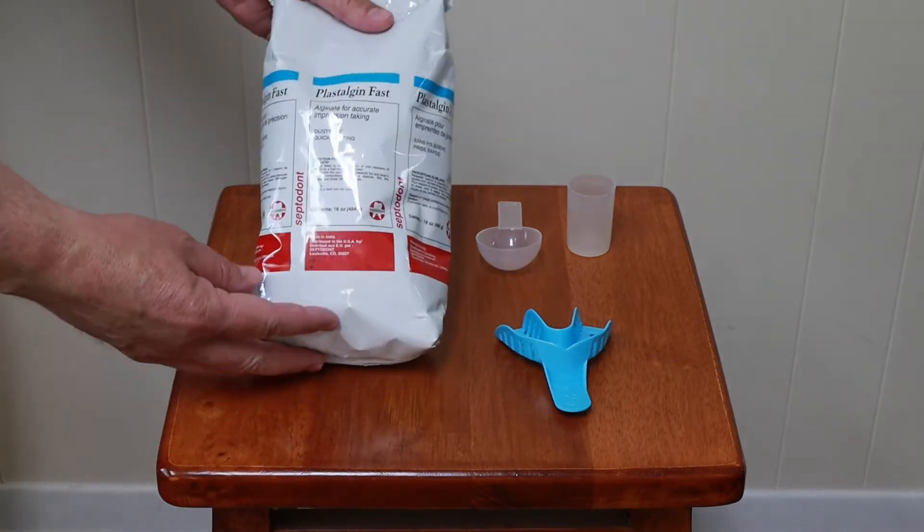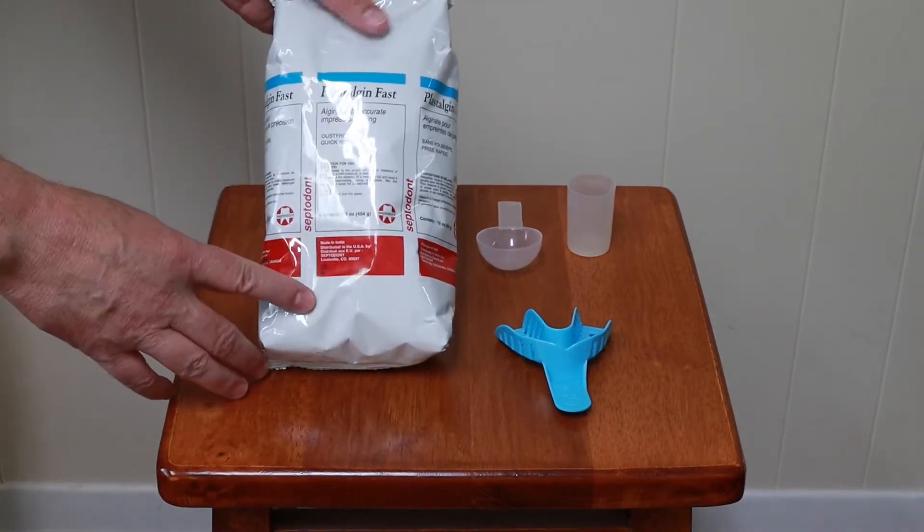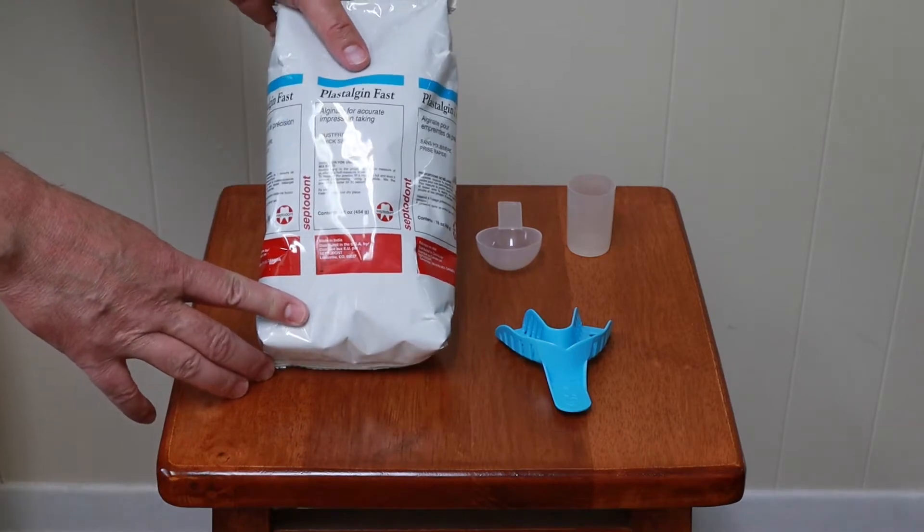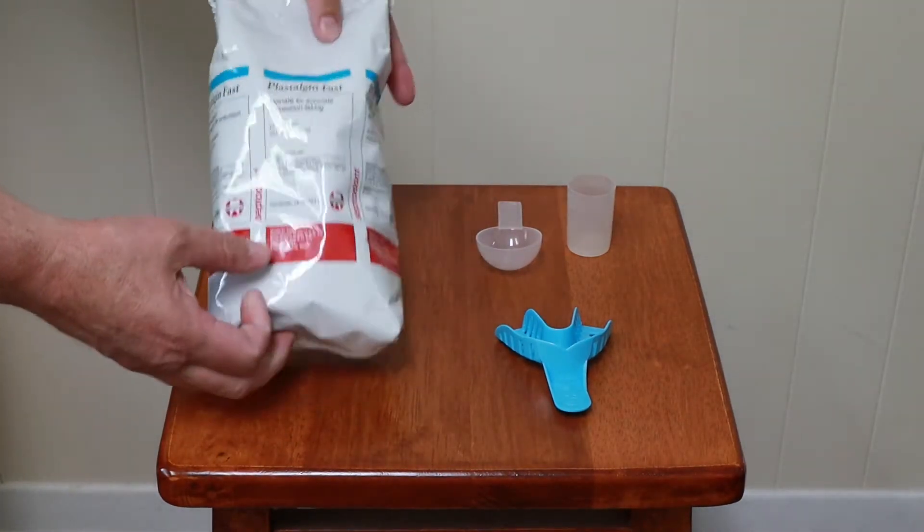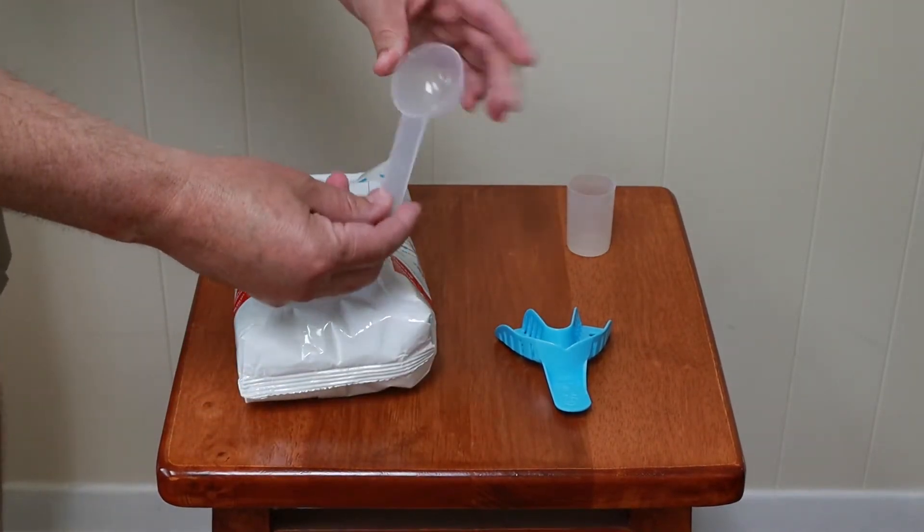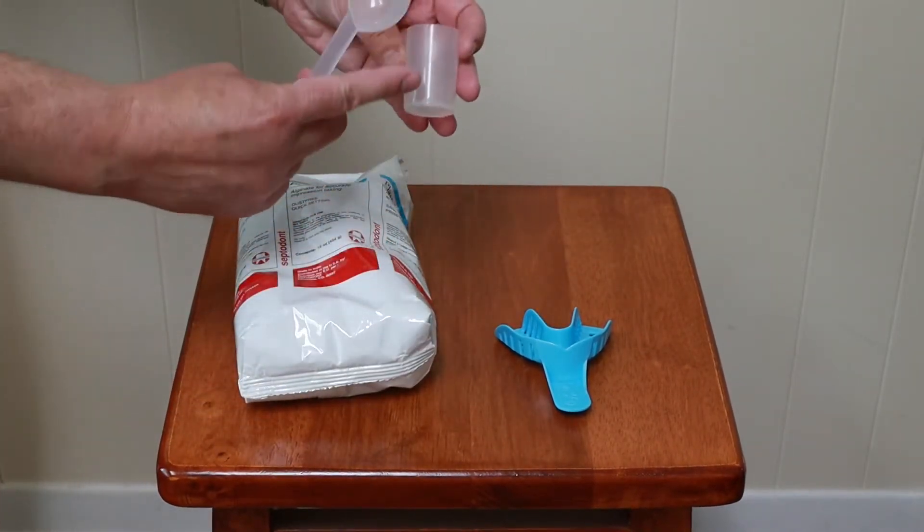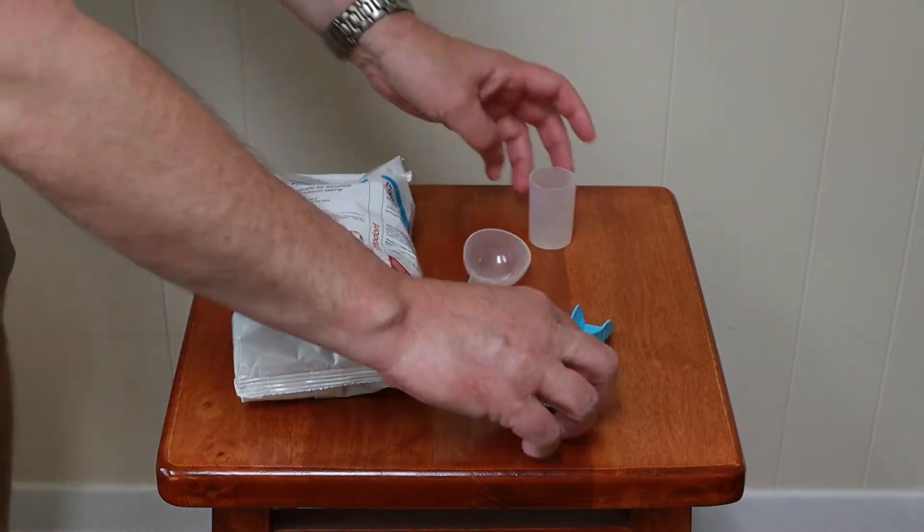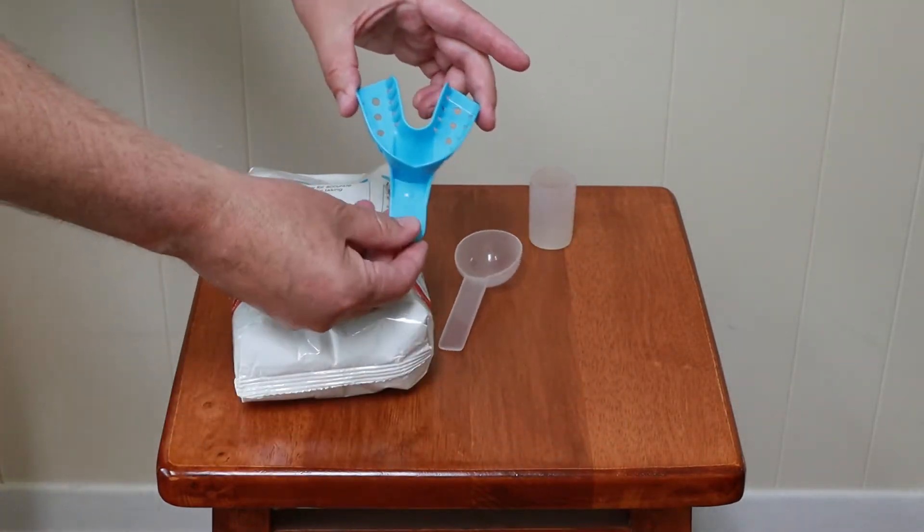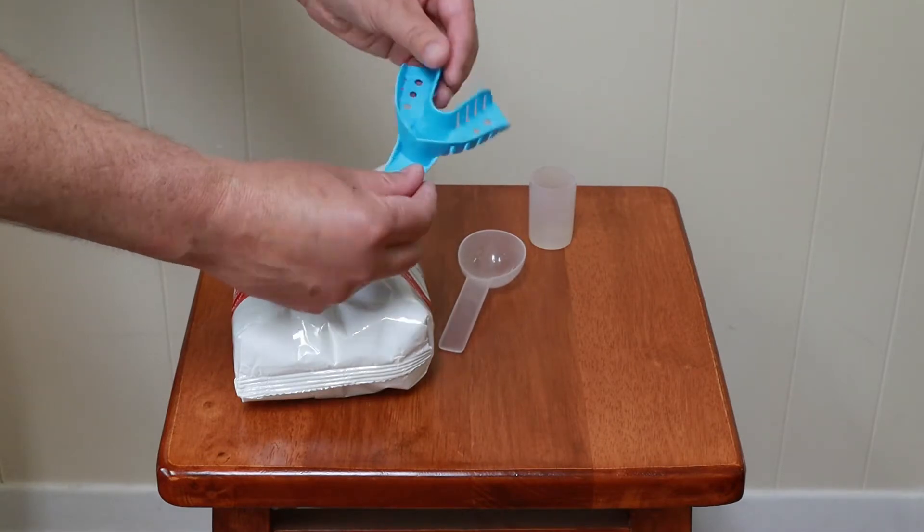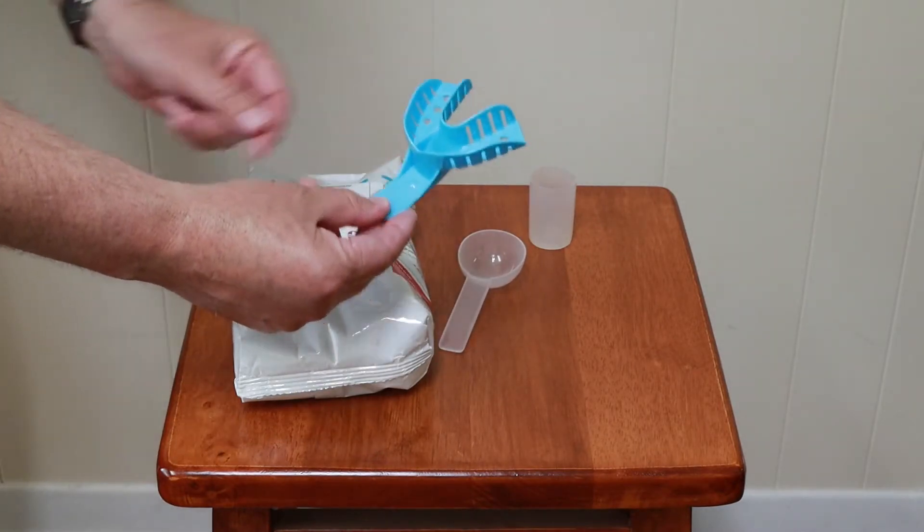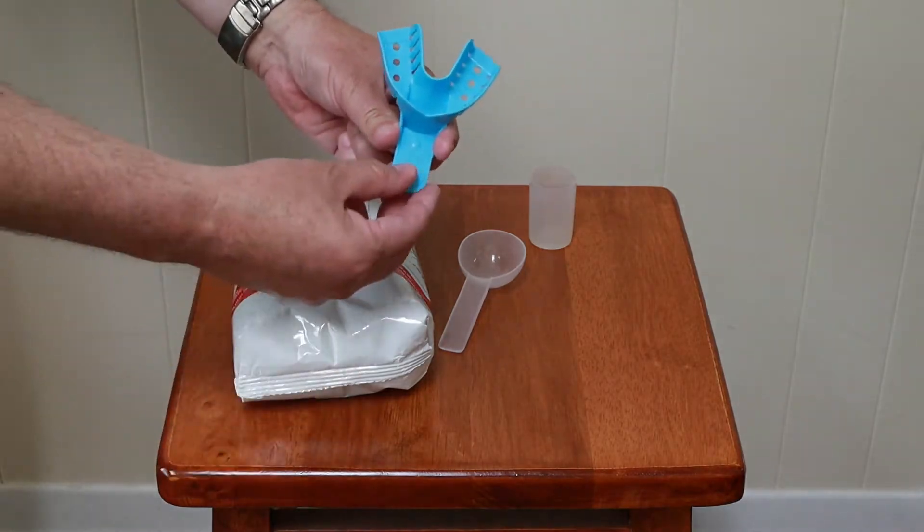So, what I'm going to use, here's the alginate that I'm going to use. The brand I use is called Plastogen. It's a fast set material made by a company called Septodont. The powder comes with a scoop and a water measure, and then here's the disposable impression tray that I'm going to use. It's a medium size that fits my mouth. I've used it in the past, so I know it'll work.